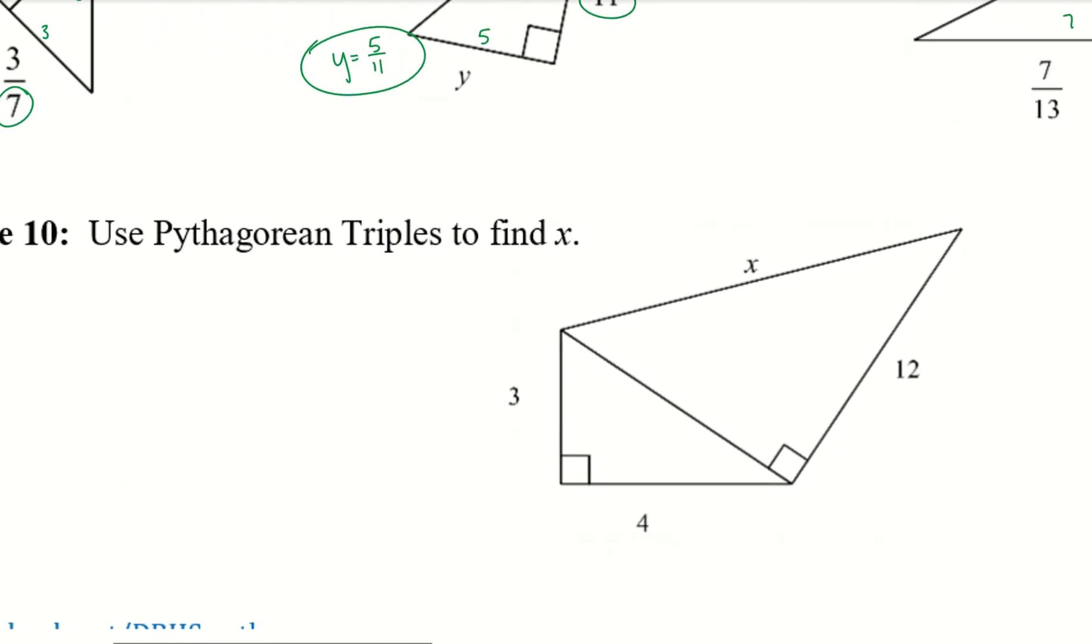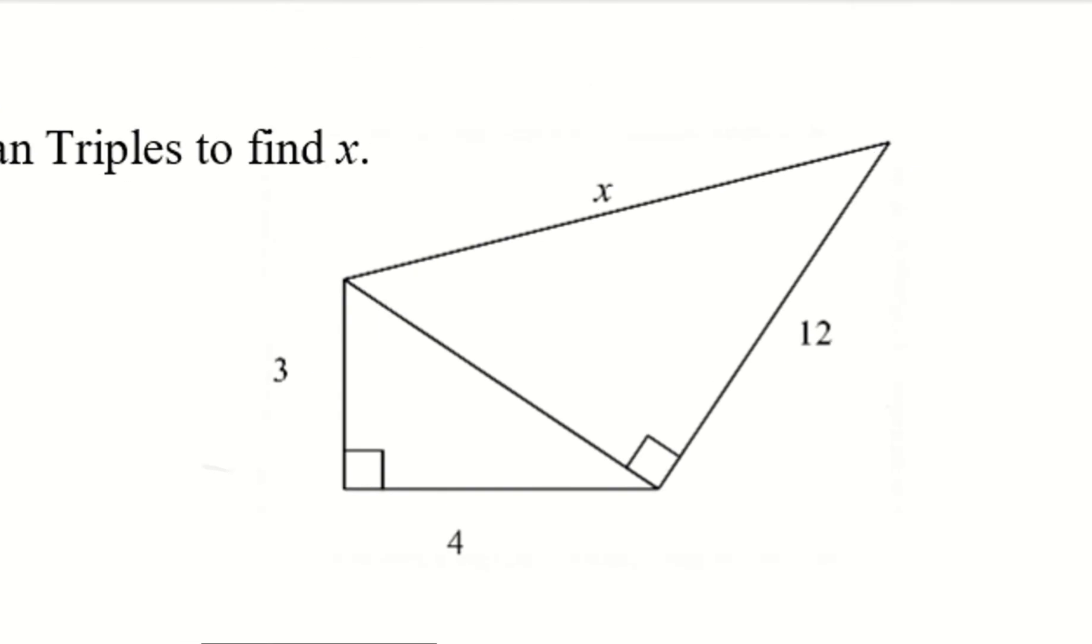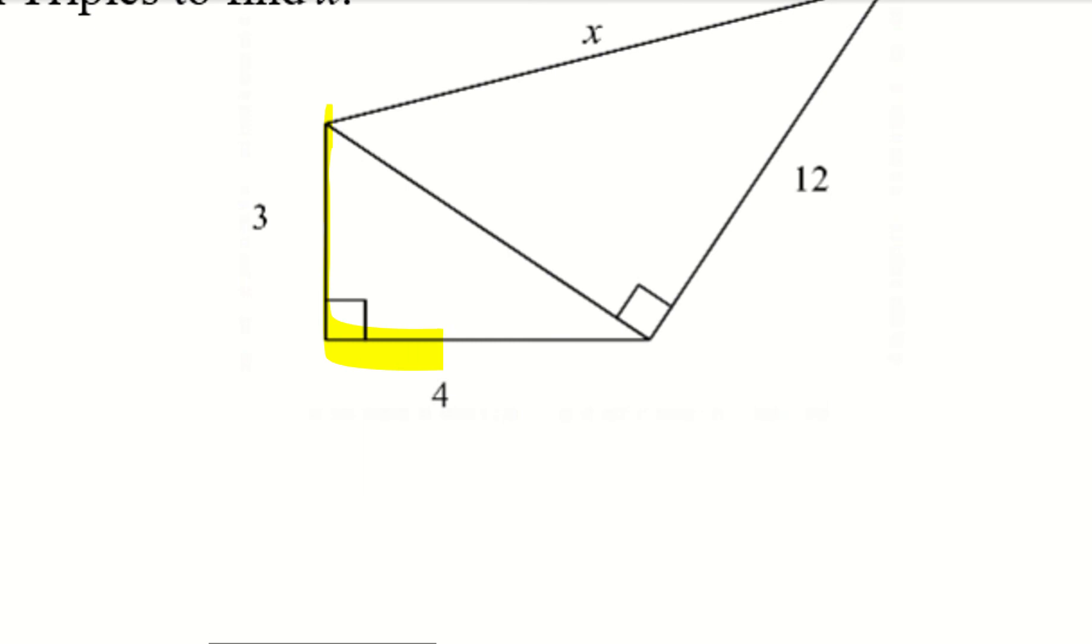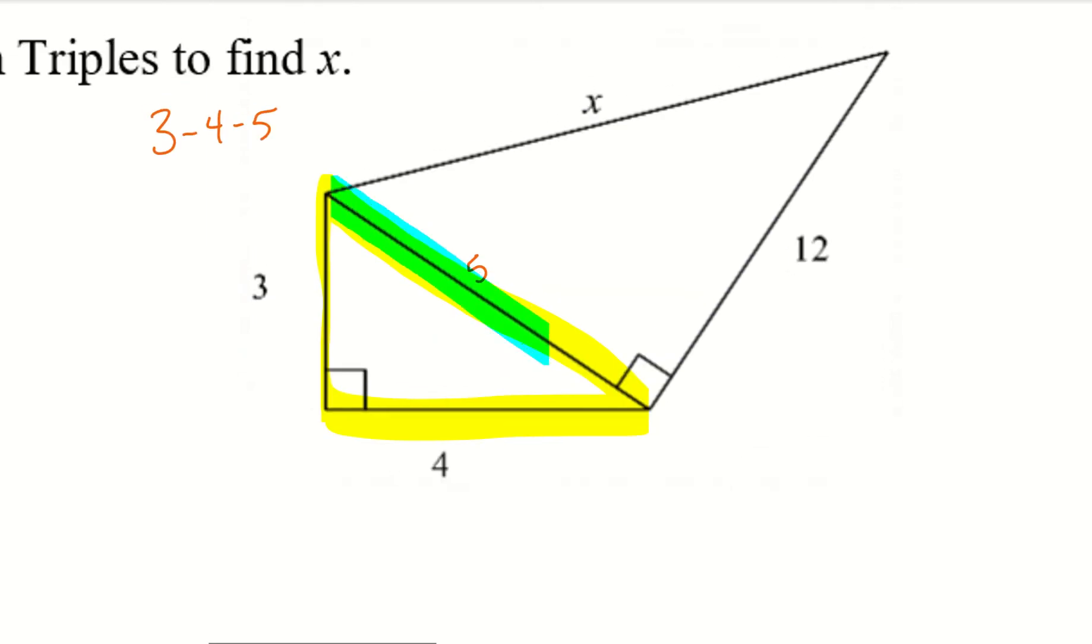Alright, let's go ahead and take a look at 10, and we want to use Pythagorean triples to find x. So, if I notice, I have a couple of right triangles here. So, the first one is this 3, 4, 5 triangle that I see. Remember, so we do have a triangle that is 3, 4, 5. So, therefore, 5 will be my hypotenuse here. Now, my second right triangle we have there. And, so far, my two sides are 5 and 12. And so, that third side should be 13 with using the Pythagorean triples, which leaves me with x equals 13.